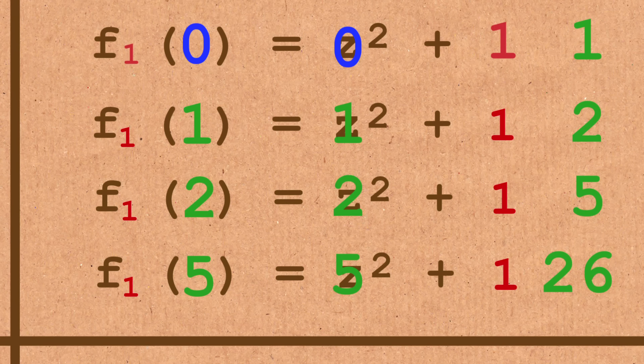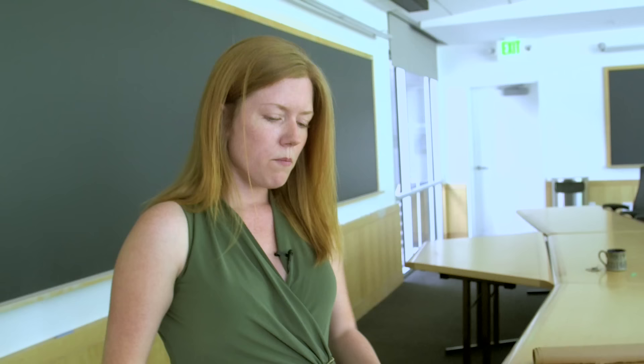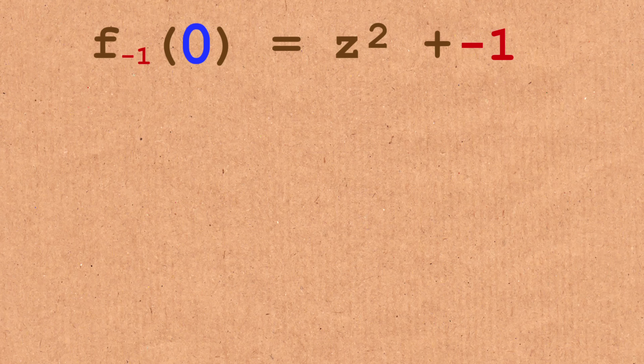For example, to illustrate these two cases, we wrote down already a few iterates under z squared plus one of zero. As you can see their size is growing and we've got some things that are further from zero than two is. So this C equals one is case one. But there's another possibility, so let's look at z squared minus one, although this might be a little misleading.